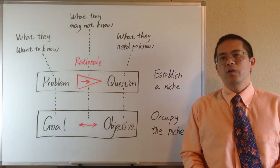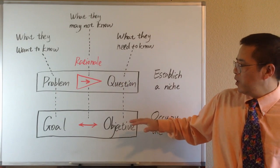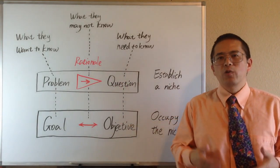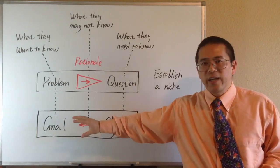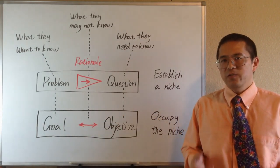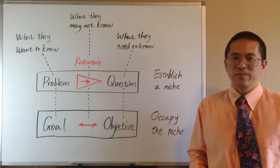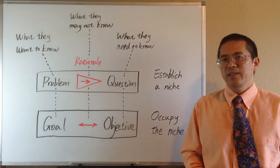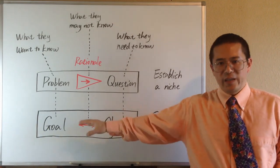A typical rhetoric pattern for the second part of the introduction is like: our long-term goal is to reach A. Our objective in this study is to obtain B. Our rationale is that B will lead to A.